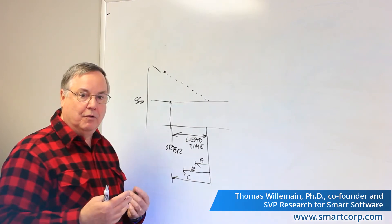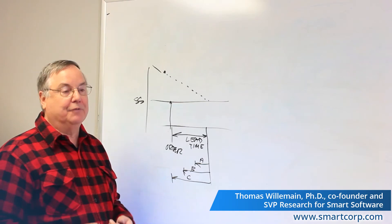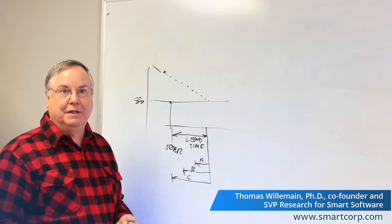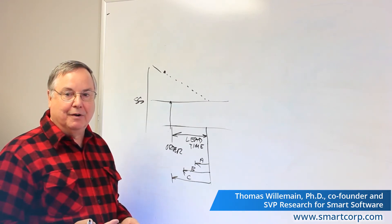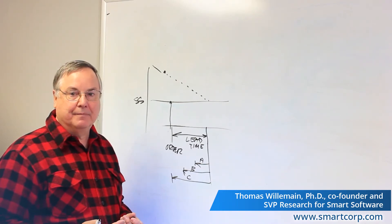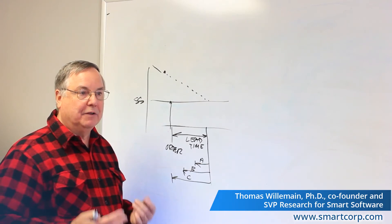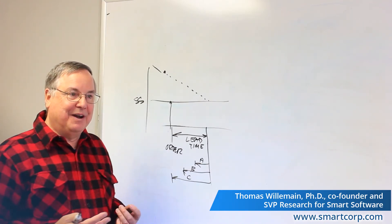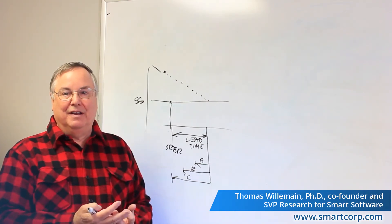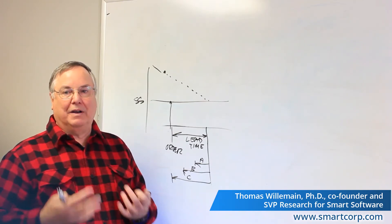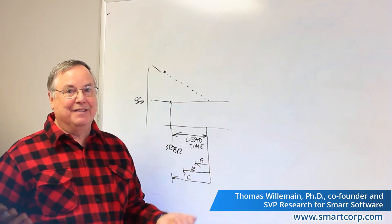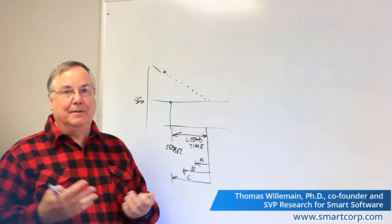If all components happen to be available quickly and uniformly — say, five days each — then that's our lead time. But if one of them takes longer, that's the one slowing the whole train down, and that's the one governing the lead time. If we happen to have available quantities of all components on the shelf — A is there, B is there, C is there, in the quantities we need — then we can basically have a lead time of one day.